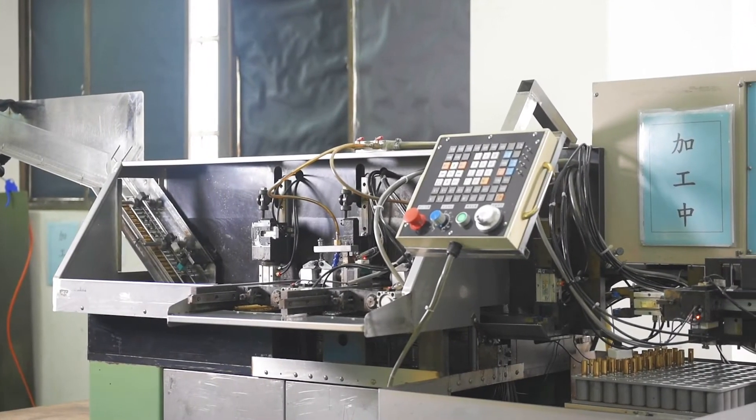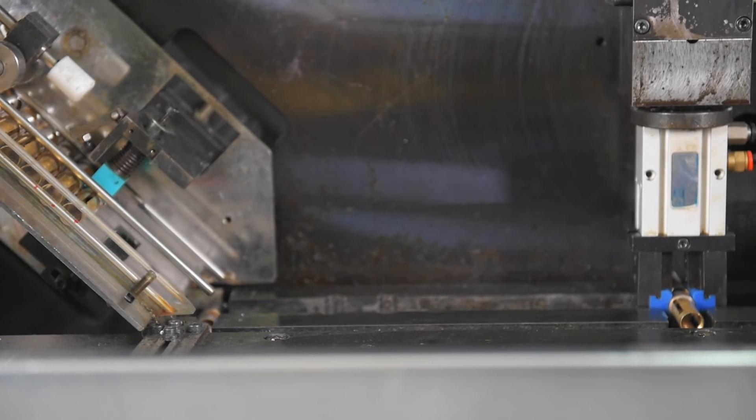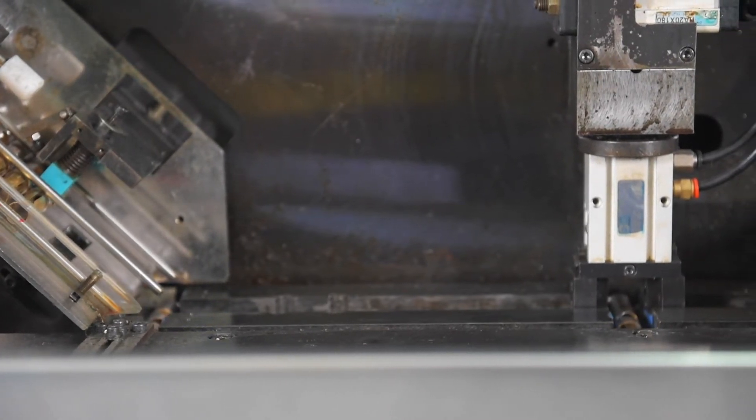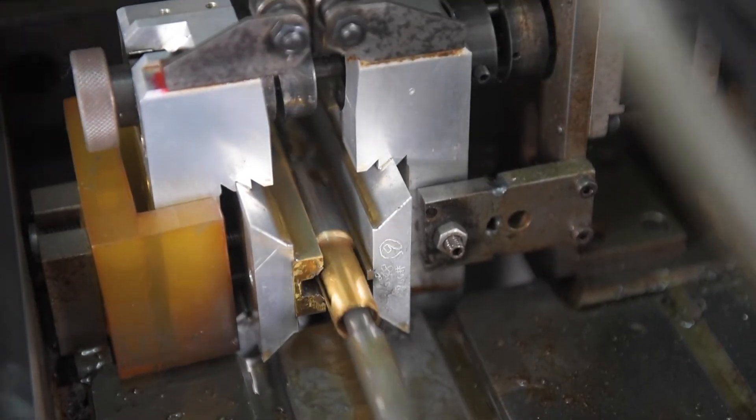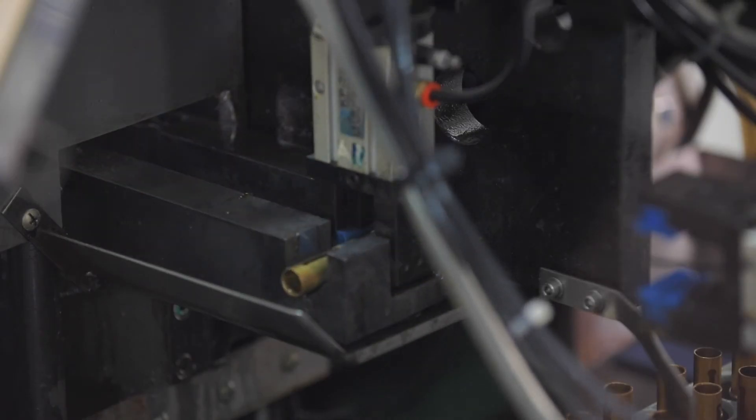Not only do pistons have to be round, but they also need to be incredibly smooth to work well inside the casings. Automatic honing machines help forge the pistons to make sure that the outer surface of the entire tube is as smooth as possible.